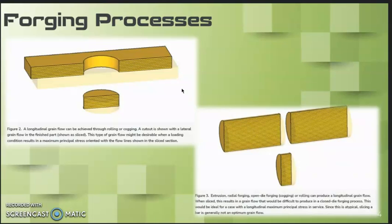Grain flow can be simulated as shown in these figures using a commercial process model. In this case, various grain flow tracking capacity exists to predict grain flow prior to running soft trials. Optimized grain flow would match the maximum principal stress component in service, resulting in the best fatigue life.